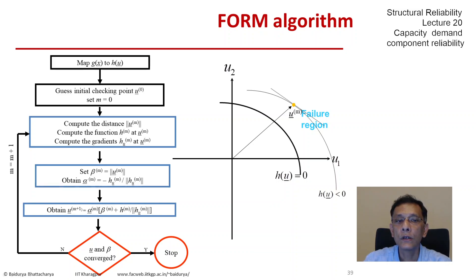We can draw the tangent to this limit state at u_m, we can find the unit normal, and we can draw a parallel line to that unit normal from the origin. That actually has the direction cosines alpha.